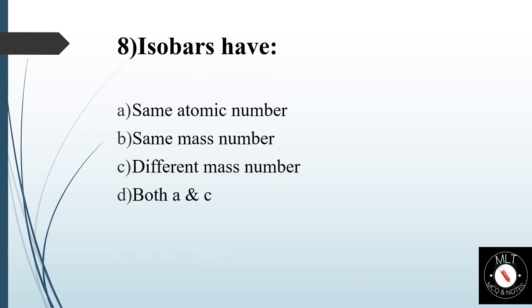Eighth question. Isobars have. Option A: Same atomic number. Option B: Same mass number. Option C: Different mass number. Option D: Both A and C. Answer is Option B: Same mass number.